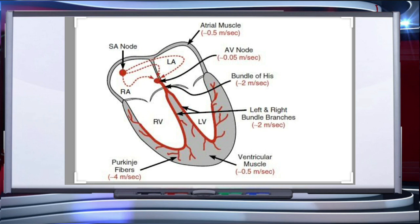The nodal musculature has the ability to generate action potentials without any external stimuli — that is, it is auto-excitable. The number of action potentials generated per minute varies at different parts of the nodal system. The sino-atrial node or SAN can generate the maximum number of action potentials, 70 to 75 per minute, and is responsible for initiating and maintaining the rhythmic contractile activity of the heart. It is therefore called the pacemaker. Our heart normally beats 70 to 75 times per minute.